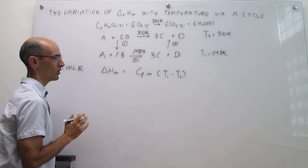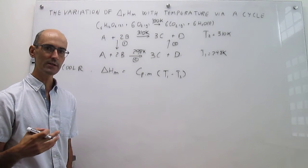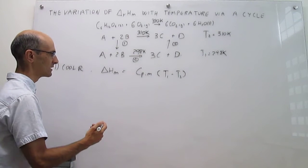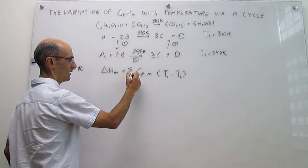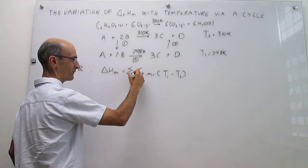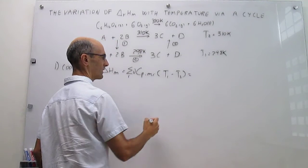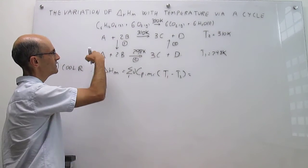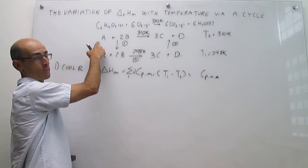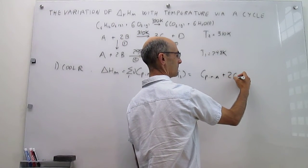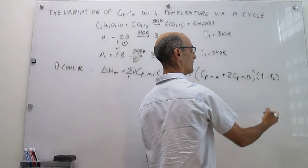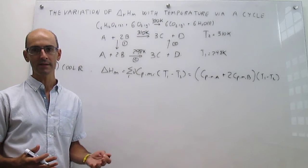The heat capacity in this step is the heat capacity of the reagents — the sum of the heat capacities of each individual reagent multiplied by the appropriate stoichiometric coefficients. Specifically, that total heat capacity is the heat capacity of A multiplied by a stoichiometric coefficient of 1, plus the heat capacity of B multiplied by a stoichiometric coefficient of 2, all multiplied by (T1 minus T2).